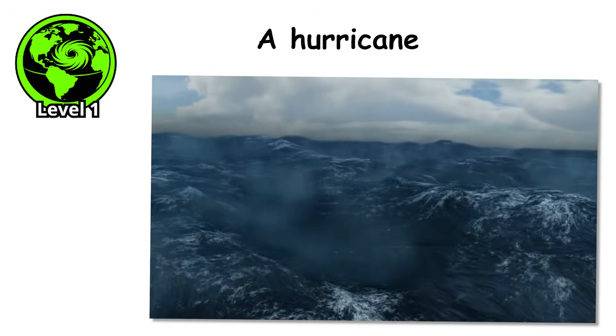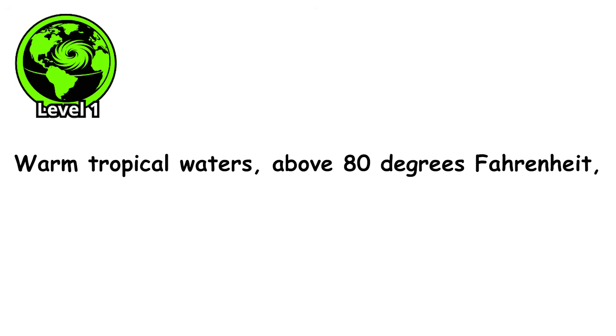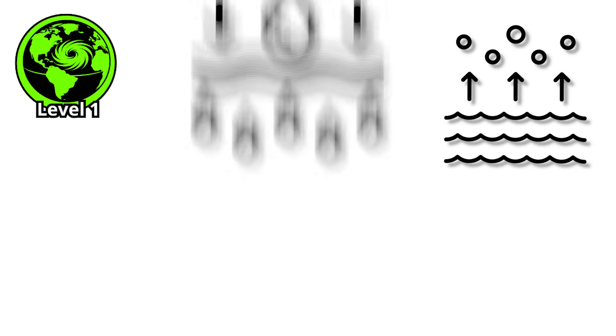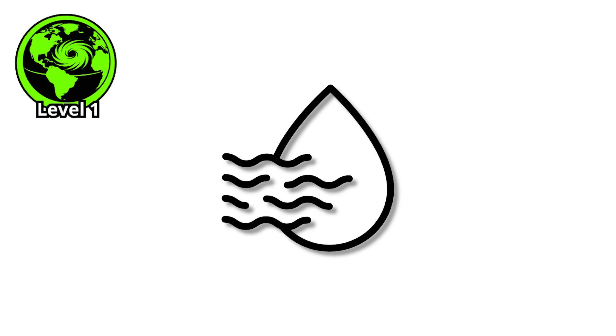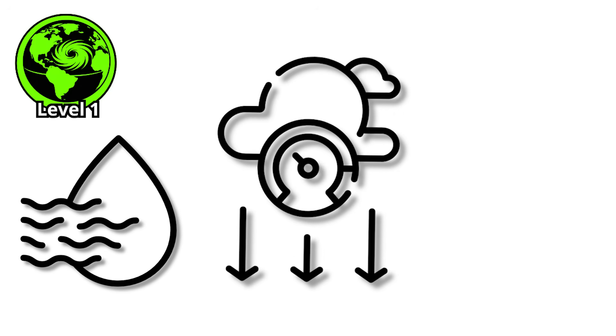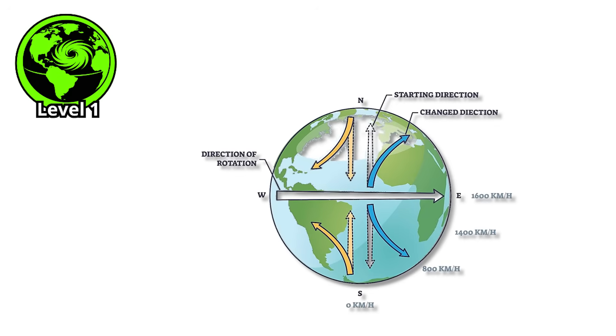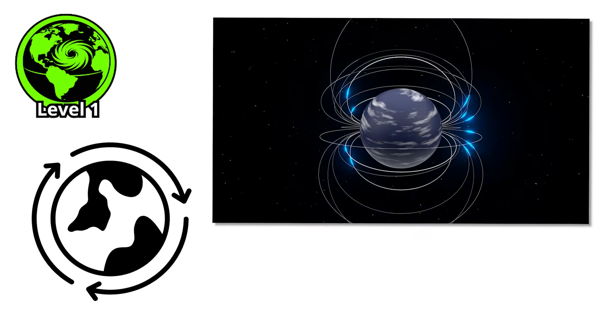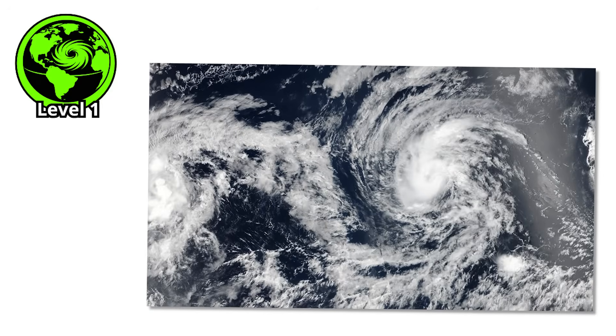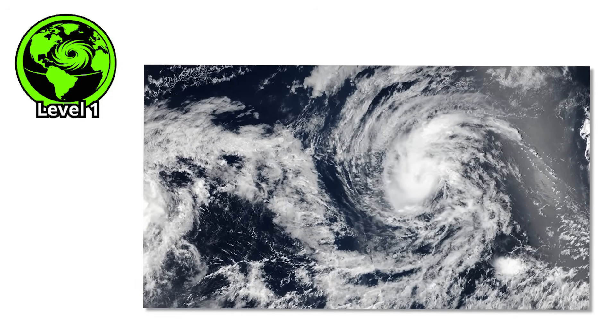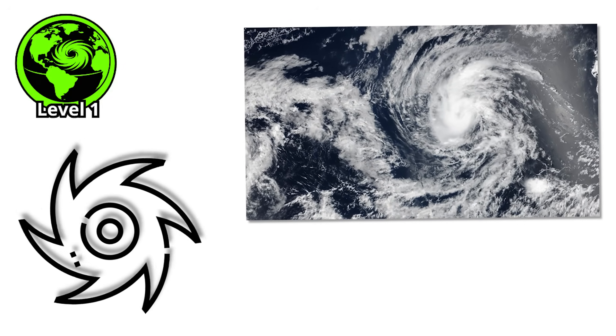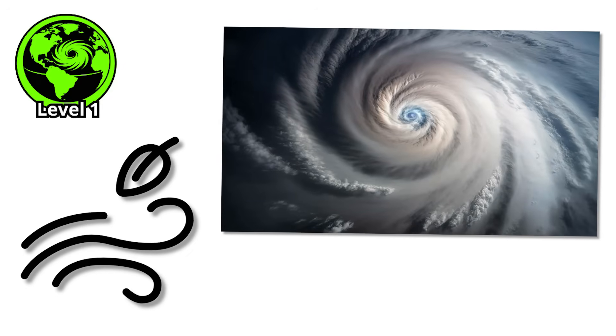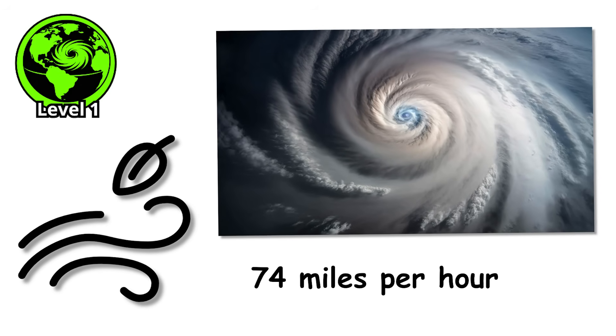Level 1. Now we're talking about something with teeth. A hurricane is what happens when the ocean gets angry. Warm tropical waters above 80 degrees Fahrenheit start evaporating massive amounts of moisture into the air. That humid air rises, creating an area of low pressure at the surface. More air rushes in to fill the void, and the Coriolis effect, that subtle twist from Earth's rotation, sets the whole system spinning. What starts as a tropical disturbance grows into a tropical depression, then a tropical storm. And finally, when sustained winds exceed 74 miles per hour, it becomes a hurricane.